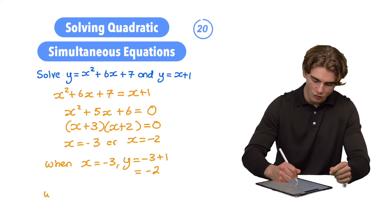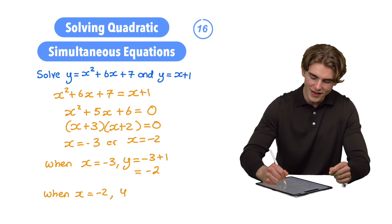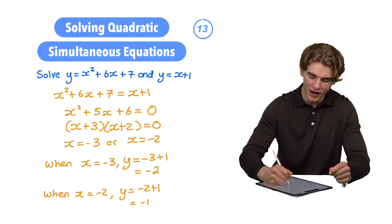What about our last one then? When x = -2, y is going to be equal to -2 + 1, which is going to be -1.